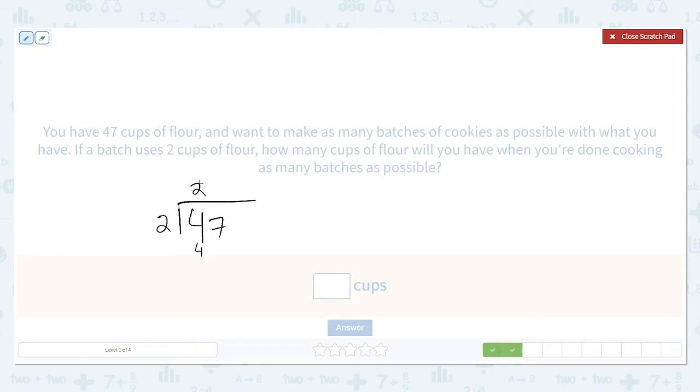and we get our answer. Subtract, we get zero, bring down the seven, goes in three times, and we have a remainder of one.